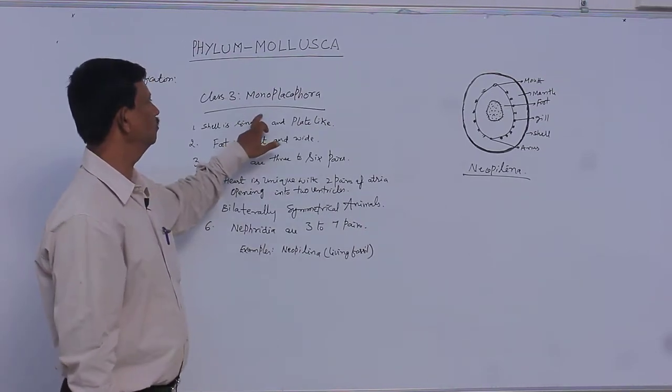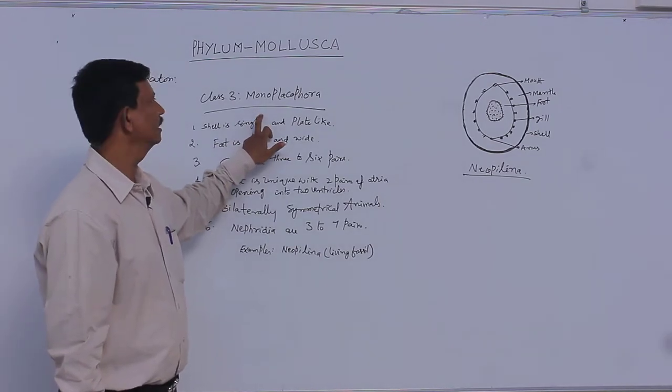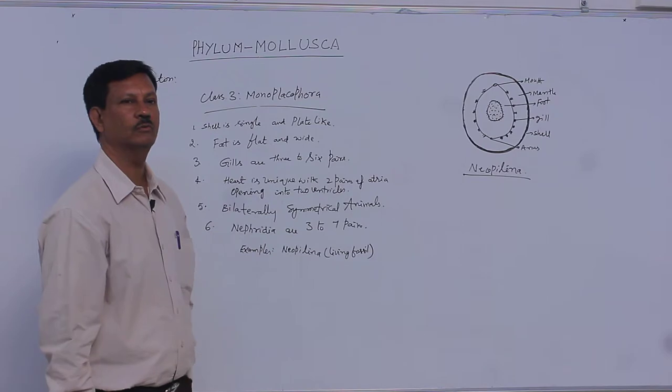Class Monoplacophora. Mono means single. A single plate is present in this class, hence it is known as Monoplacophora.